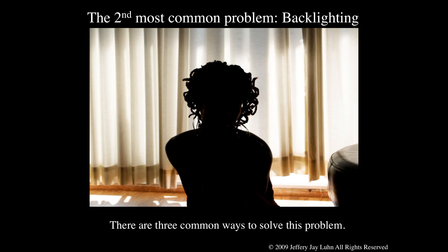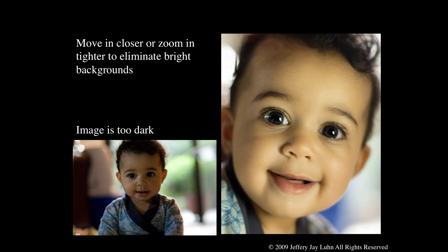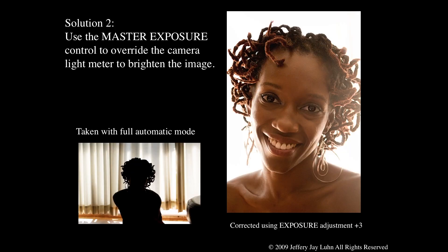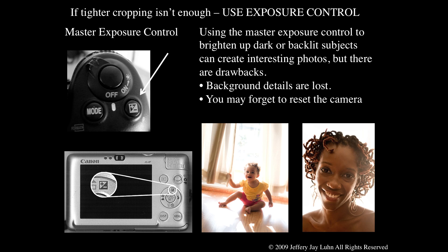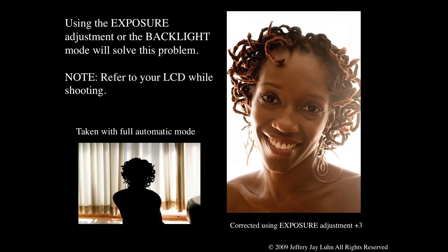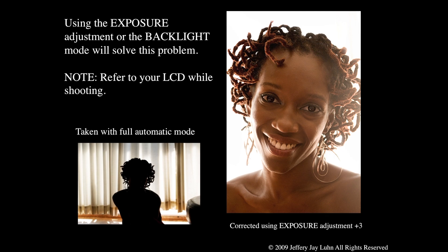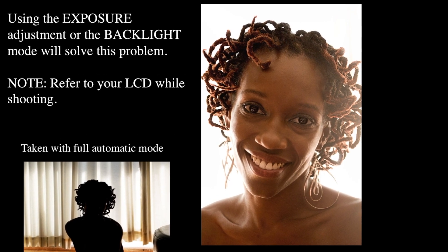There are three common ways to solve this problem. One solution is to eliminate as much of the bright background as possible by moving in a lot closer — you'll find that the subject will be properly exposed just by eliminating the bright background. The second solution is using the master control: you can override the camera's light meter to brighten the image. On the left we see she is a silhouette. I've moved in closer and changed the overall exposure to an adjustment of plus three. The background details are completely lost, and you actually get a nice wrap-around on Ashley's face — accomplished by going to plus three in this particular situation.